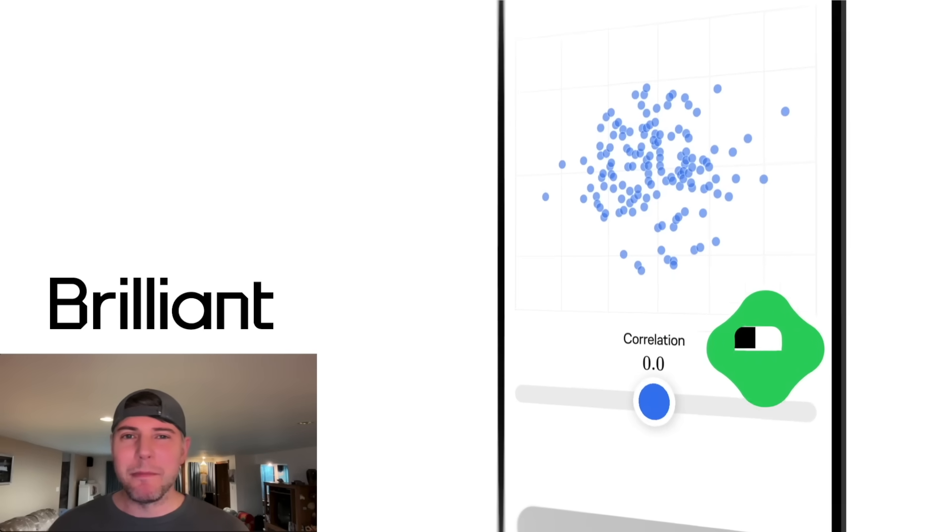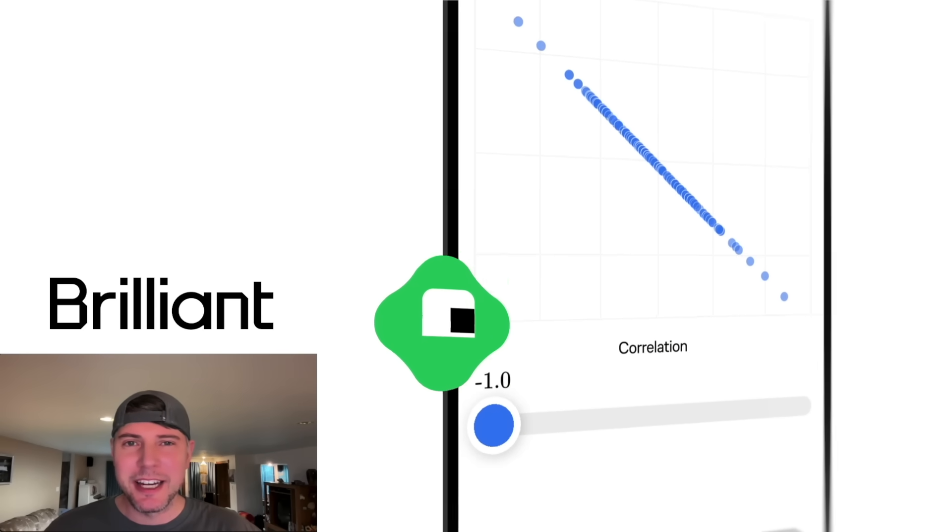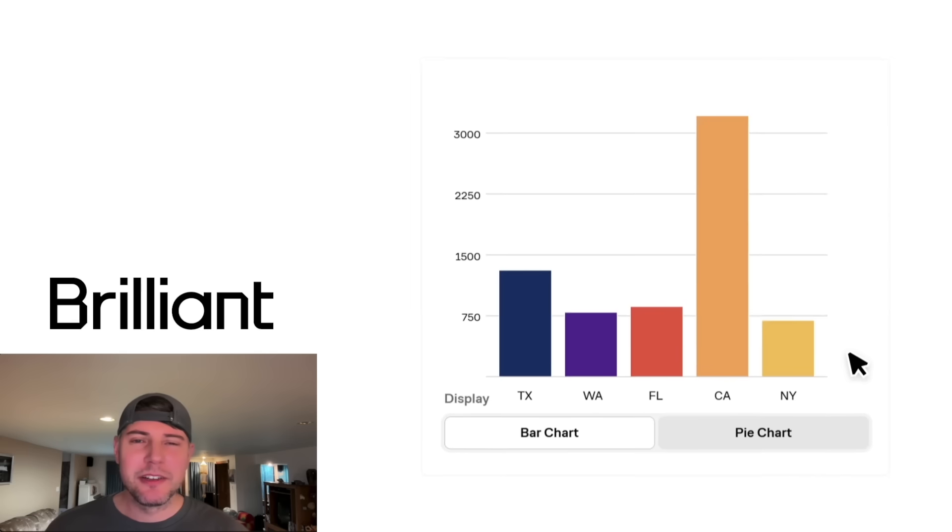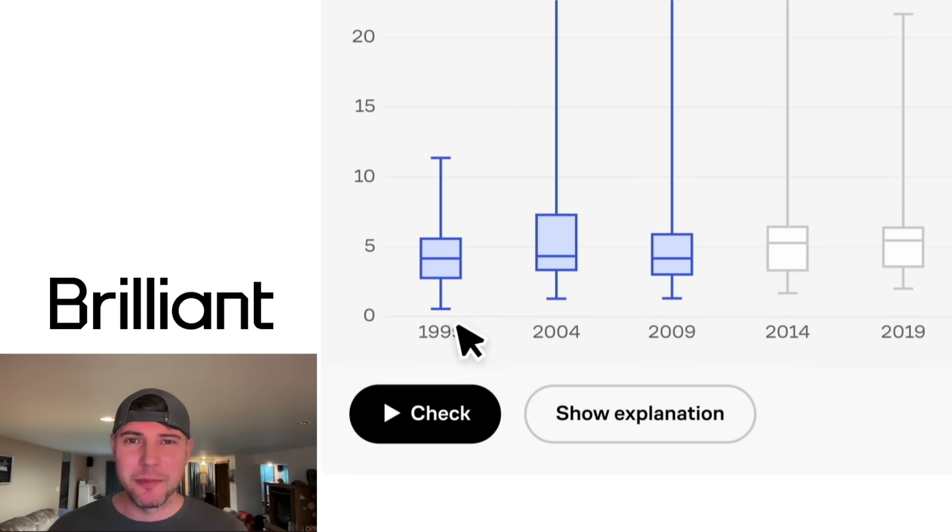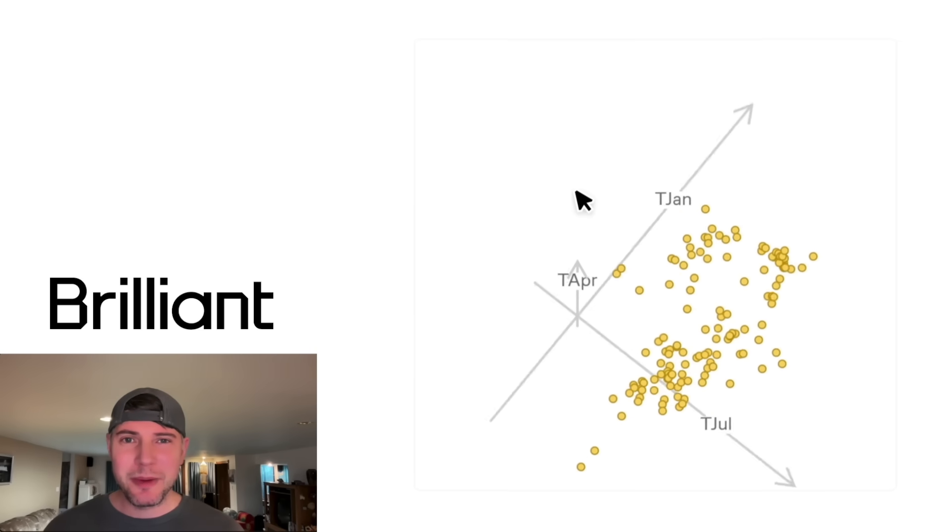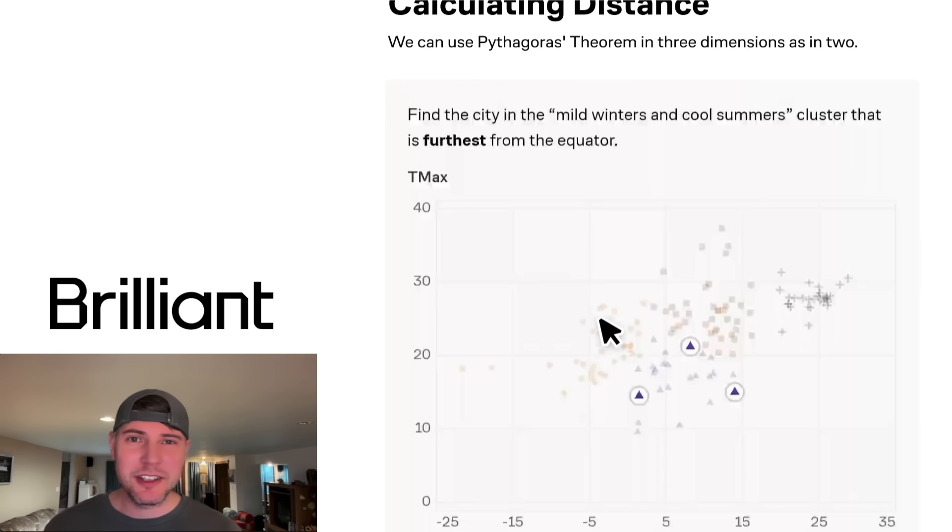Brilliant has thousands of lessons in math, data analysis, programming, and AI. All of them are interactive, which is the most effective way to learn. I really like learning new topics. I literally learn something new every single day. Sometimes I'm not exactly sure what to do next, but with Brilliant, they're always in order.